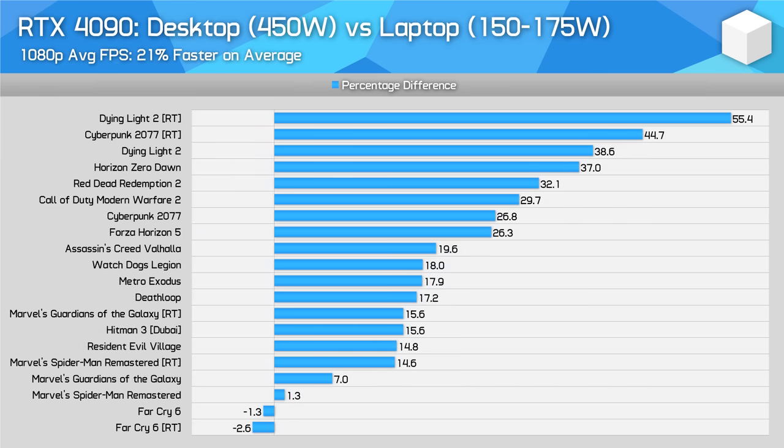Meanwhile at 1080p, the margins between the desktop and laptop card are much less pronounced. On average here the desktop card was just 21% faster — still a significant margin — but this did include four test scenarios with a margin less than 10%. Some games are still quite GPU demanding at 1080p and they saw the biggest margins in excess of 30%, but it's clear in CPU limited scenarios that the difference between a flagship desktop CPU and flagship laptop CPU are much less than the differences on the GPU side.